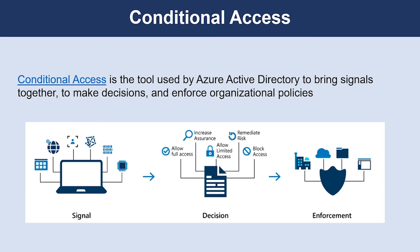Now let's understand what conditional access is. The modern security perimeter now extends beyond an organization's network to include user and device identity. Organizations can utilize these identity signals as part of their access control decisions. Conditional access is the tool used by Azure Active Directory to bring signals together to make decisions and enforce organizational policies, and it is at the heart of the new identity-driven control plane. Conditional access policies at their simplest are if-then statements: if a user wants to access a resource, then they must complete an action.